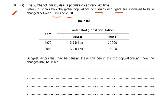Suggest factors that may be causing these changes and how the changes may be linked. Tiger populations are declining while human populations are increasing. The birth rate of humans is higher and the death rate for tigers is higher. There is less disease and medical advances for humans so people are living longer. Tigers are being hunted and there is less habitat available — destruction of tiger habitat because people want to build buildings, clear forests, and pursue urbanization.